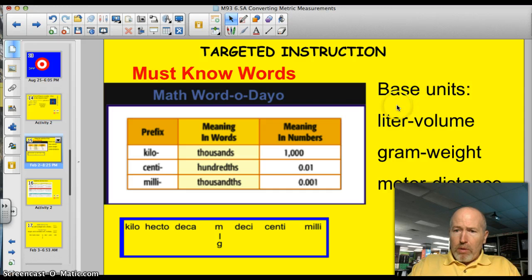Also, kilo means thousands. We've got the number there. Centi means hundredths. And milli means thousandths. These here are the three most crucial words, knowing what those mean.